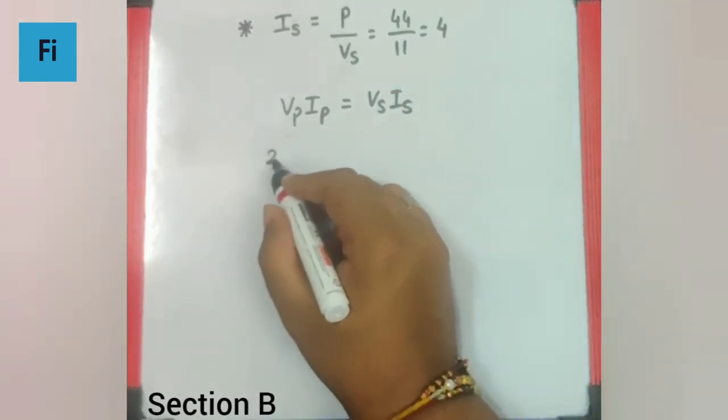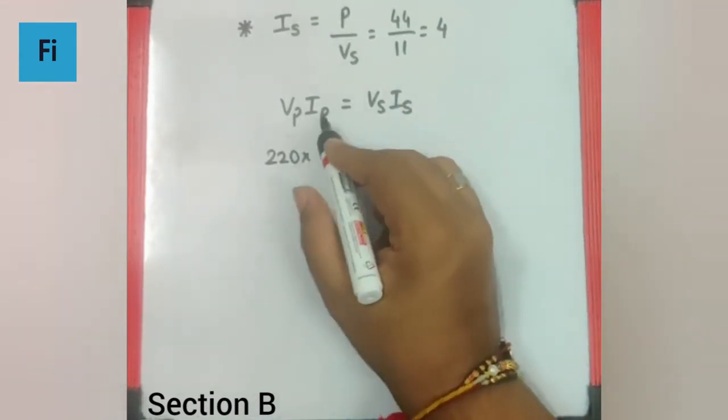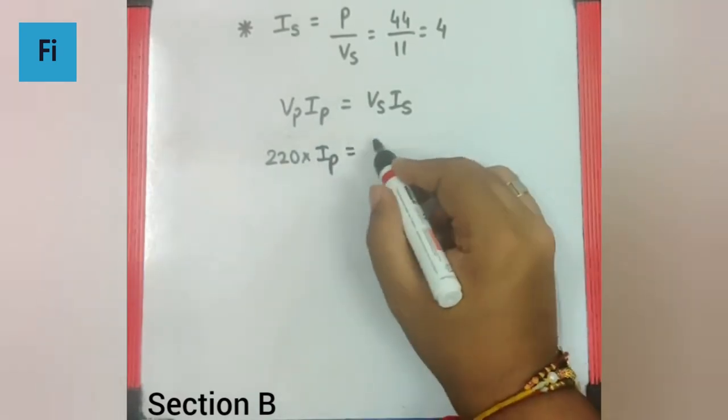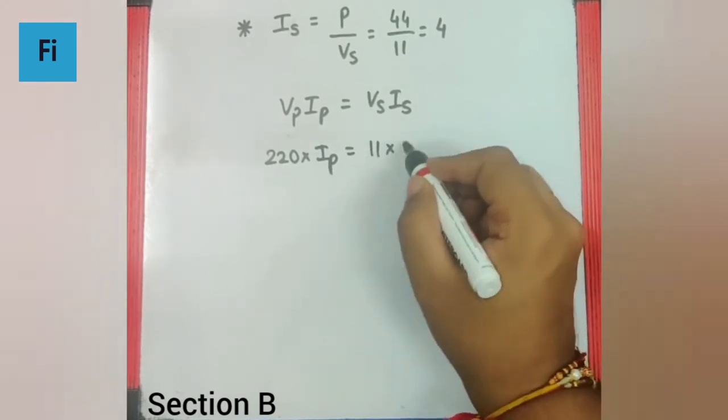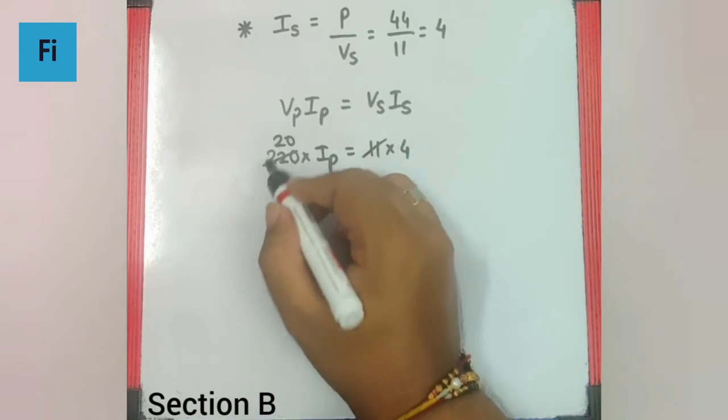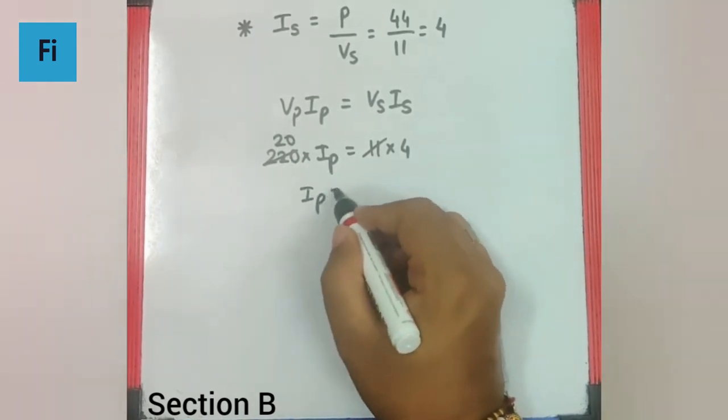So V in the primary circuit is 220, current in the primary circuit we are supposed to find, V in the secondary is 11 and I in the secondary is 4.